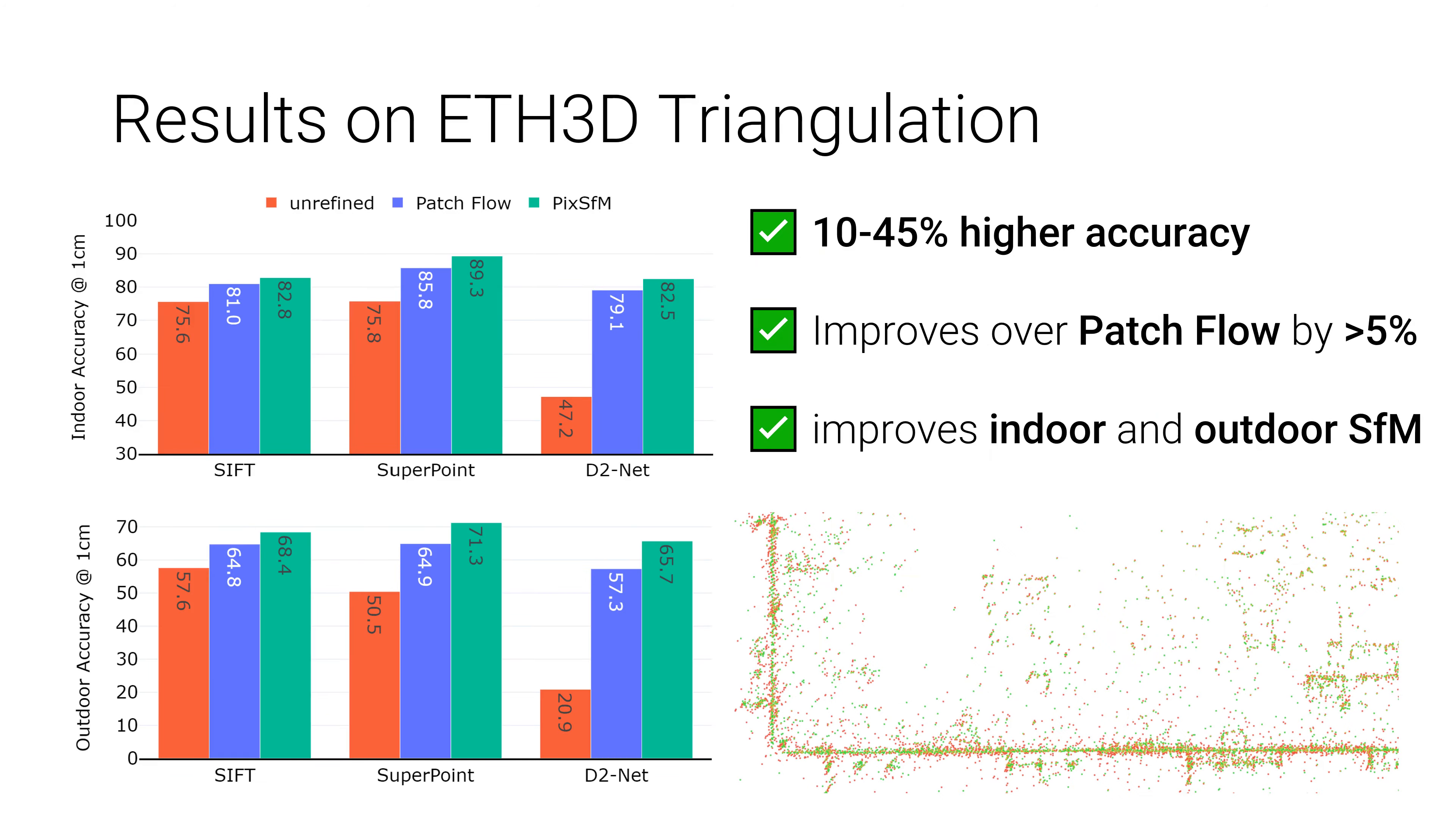Both on indoor and outdoor scenes, pixel-perfect structure from motion outperforms both COLMAP and patch flow on the ETH 3D triangulation benchmark. Especially learned features like SuperPoint or D2-Net benefit from our refinement.